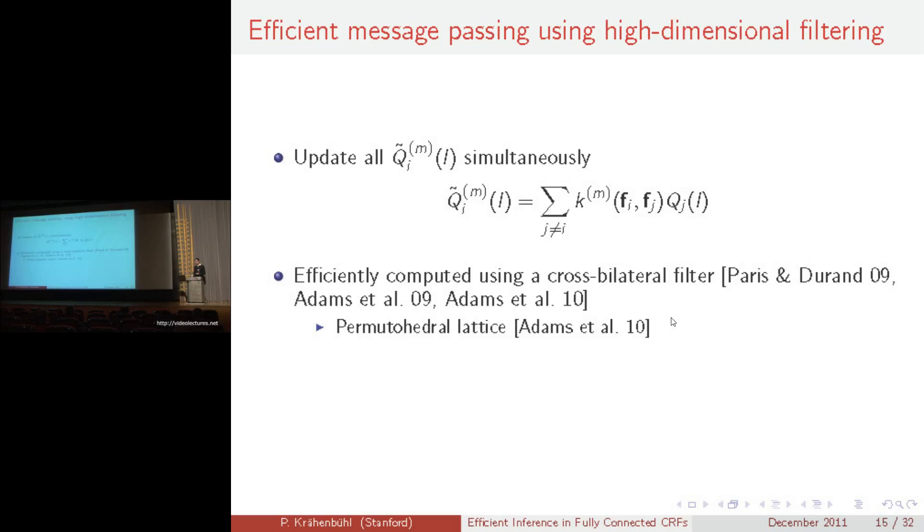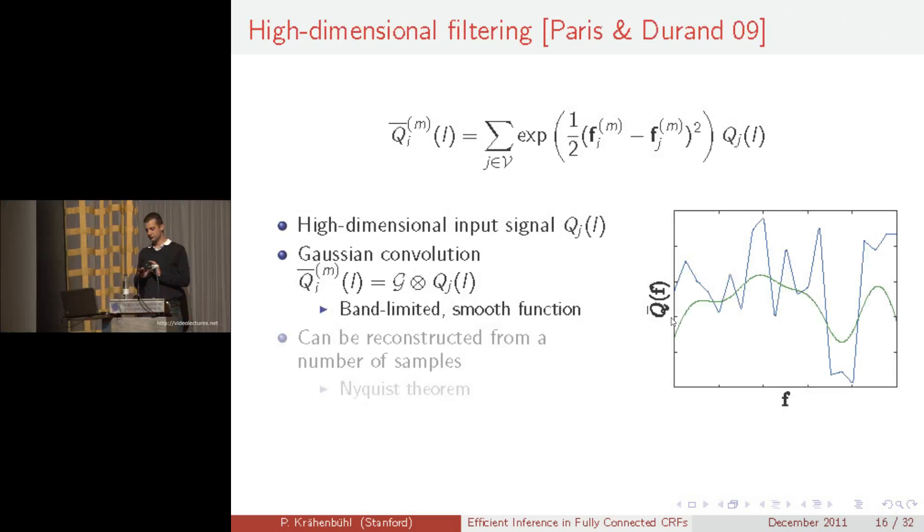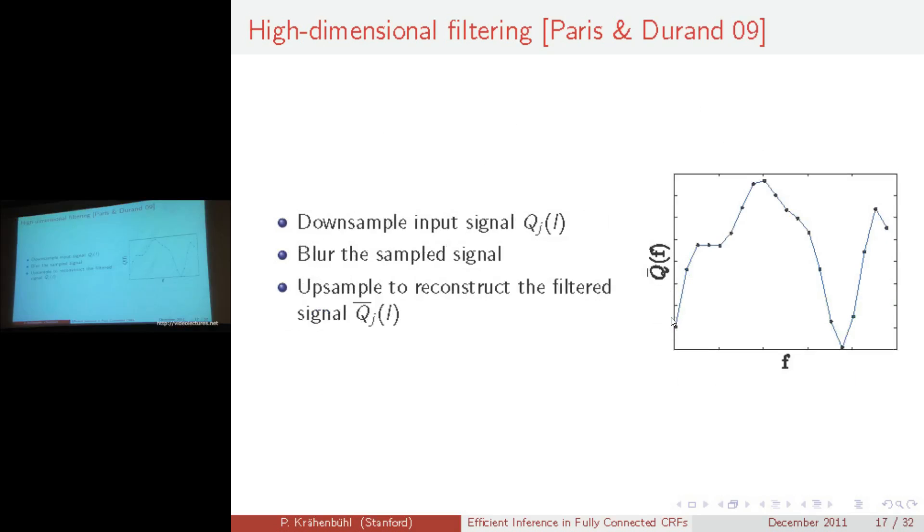Let's start by looking at some work done by Paris and Durand. Paris and Durand observed that given an arbitrary high dimensional input signal, as soon as it's convolved to the Gaussian kernel, the signal is smooth and band limited, as you can see here in green. Any such smooth and band limited function can be represented by a sparse set of samples, which is a direct consequence of the Nyquist theorem. Now that we know that we can represent the result of the convolution with a sparse set of samples, Paris and Durand proposed the following algorithm. They first downsample the input signal onto the sparse set of samples, then simply blur the sampled signal in the discrete domain and upsample the signal again into the continuous domain.